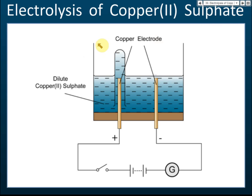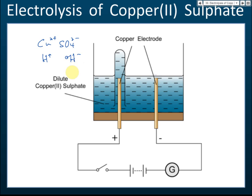This is electrolysis of copper(II) sulfate. The ions present are copper ions, sulfate ions, hydrogen ions, and hydroxide ions — which together form water. Copper and hydroxide will be selected to be discharged.